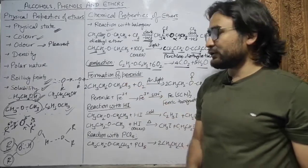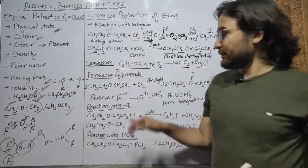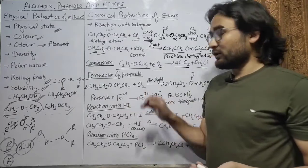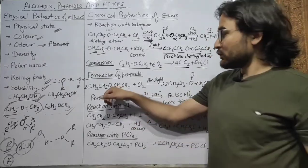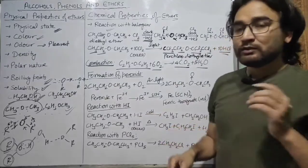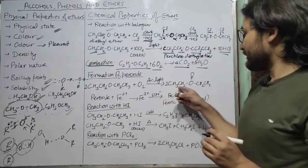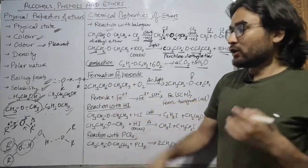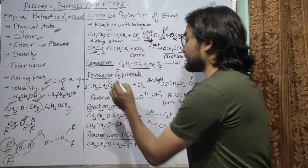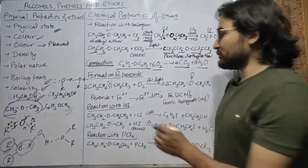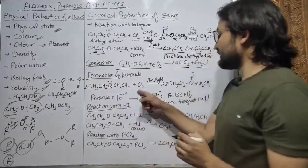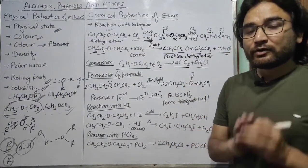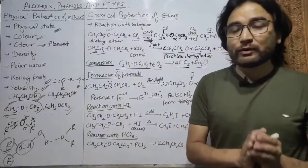The next is the formation of peroxide. Generally, if you react an ether with oxygen — the oxygen present in air — in the presence of light, ethers get quickly oxidized and form a peroxide. Here, one more oxygen atom gets attached to the existing oxygen. Since oxygen has lone pairs of electrons, it can share a lone pair with another oxygen atom, thereby forming a peroxide.